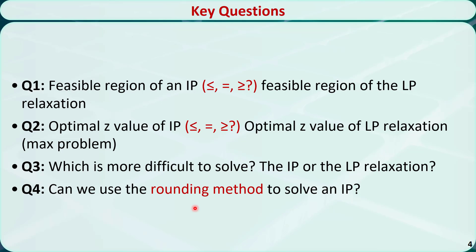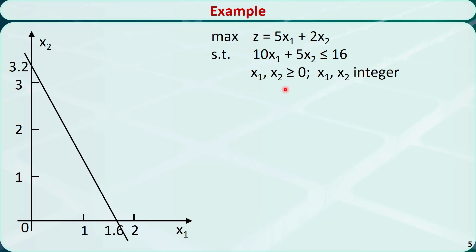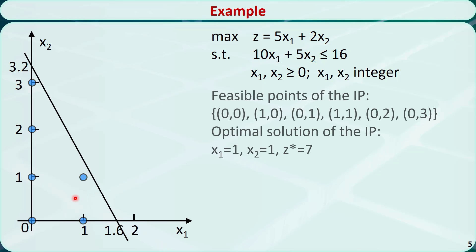The answer is no. Let's see an example. This is an integer programming problem with two variables, x1 and x2, represented in a figure. Because x1 and x2 are both integer numbers, the feasible region contains just 6 points: (0,0), (1,0), (0,1), (1,1), (0,2), and (0,3). We can check the z value of each point. The optimal solution is x1 = 1, x2 = 1, with z* = 7.